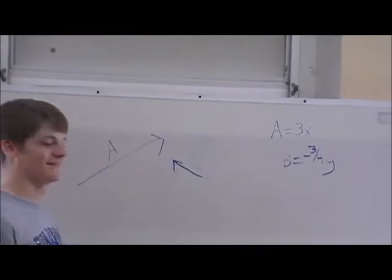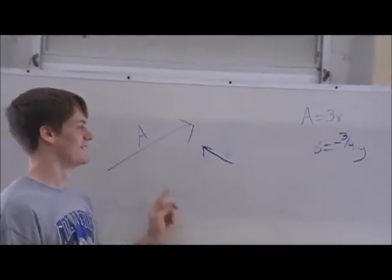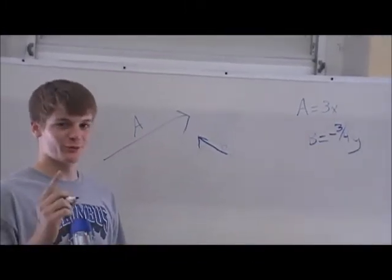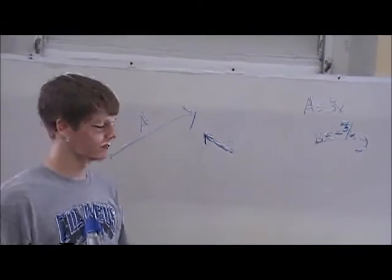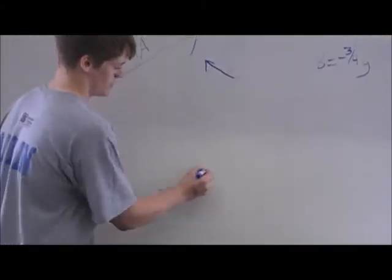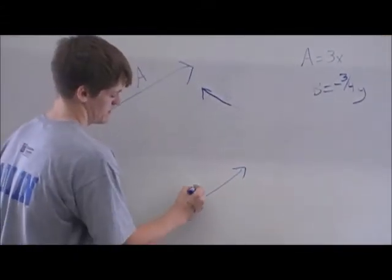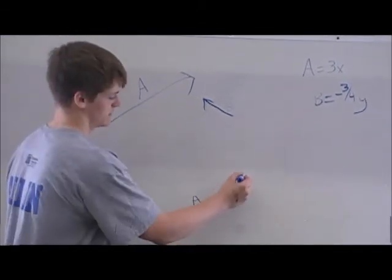Hello! Subtracting vectors. To subtract vectors, there is only one method, the head to tail. Take A, redraw it, and add B where it ends.